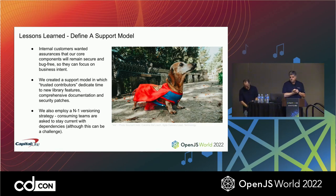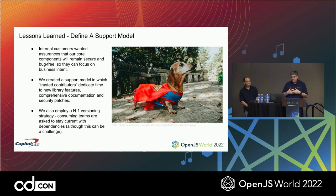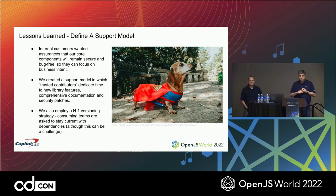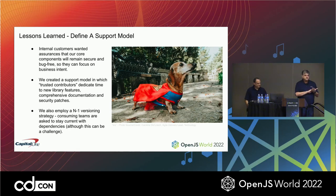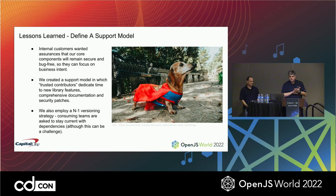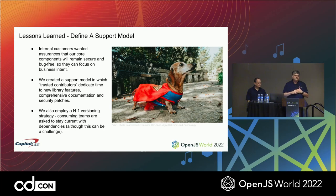Another lesson is defining our support model. We needed everyone on board knowing that we'd be iterating fast and producing smaller components delivered much faster — so they needed to remain relatively secure and as bug-free as possible. We have trusted contributors who dedicate time to new shared libraries and features, with comprehensive documentation and security patching — the entire federation of developers benefits from all the core work. We also employ an N-minus-one versioning strategy where consuming teams are asked to stay current with dependencies, which is one of our biggest ongoing challenges.